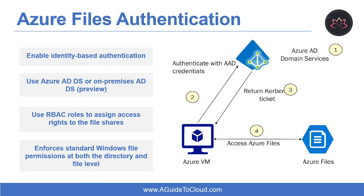Identity-based authentication for Azure files offers several benefits over shared key authentication. It extends the traditional identity-based file share access experience to the cloud with on-premises ADDS and Azure ADDS. If you plan to lift and shift your application to the cloud, replacing traditional file servers with Azure file shares, your application can authenticate with either on-premises ADDS or Azure ADDS credentials to access file data from domain-joined VMs.